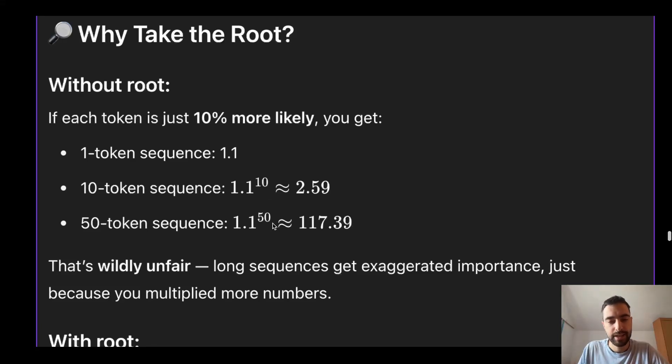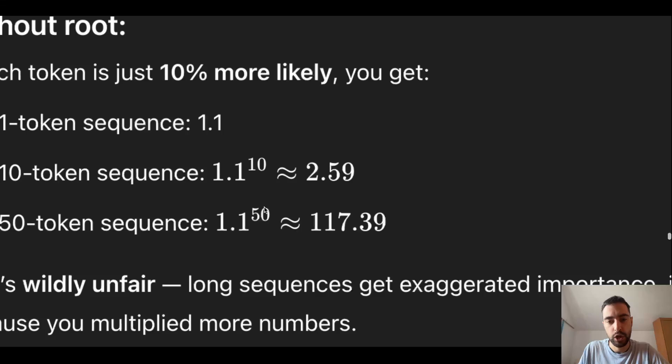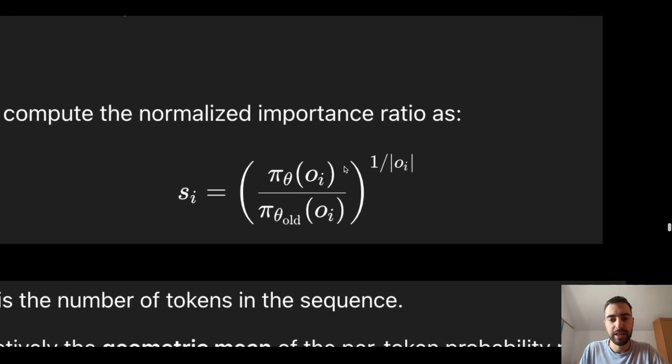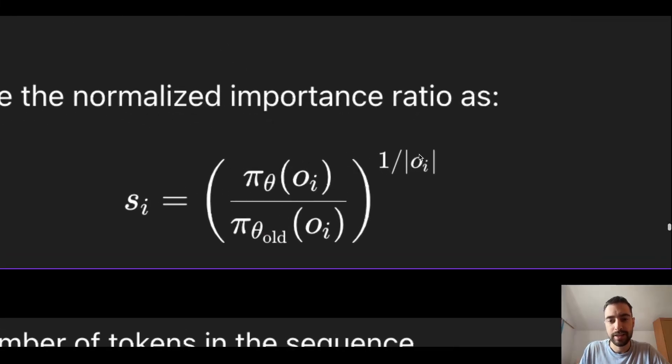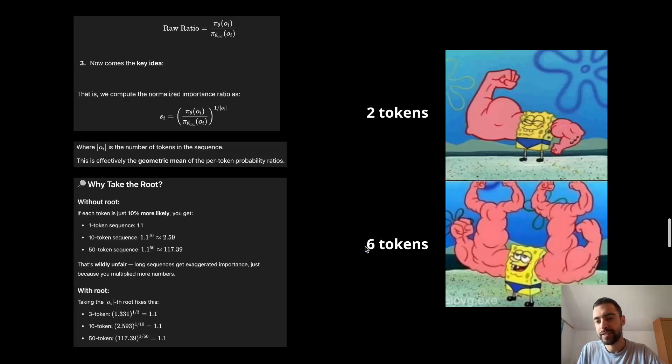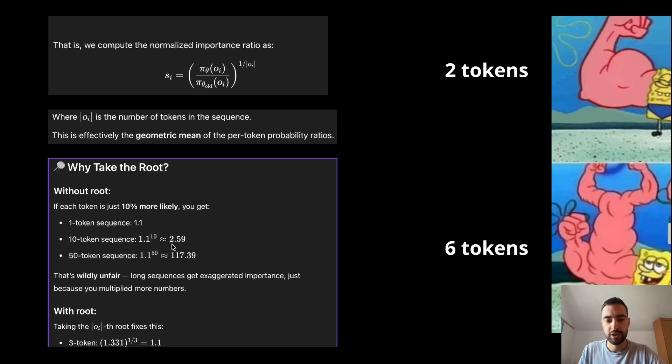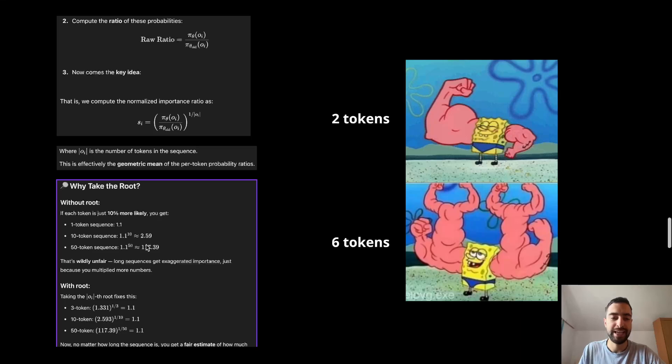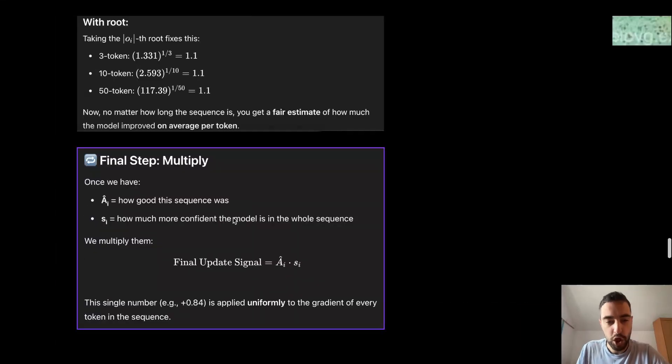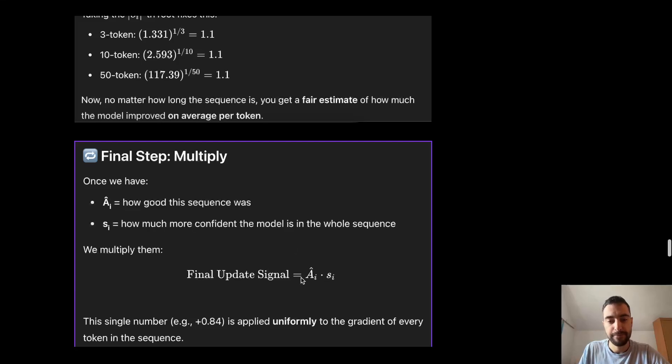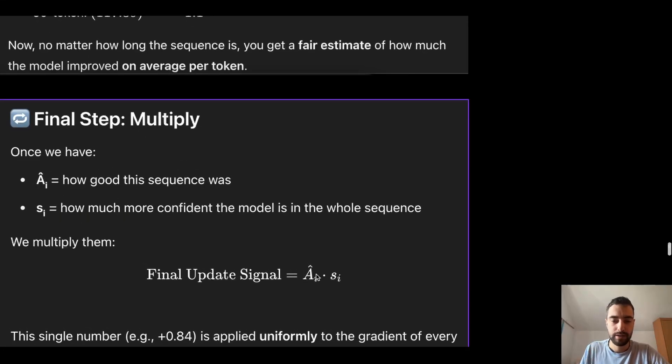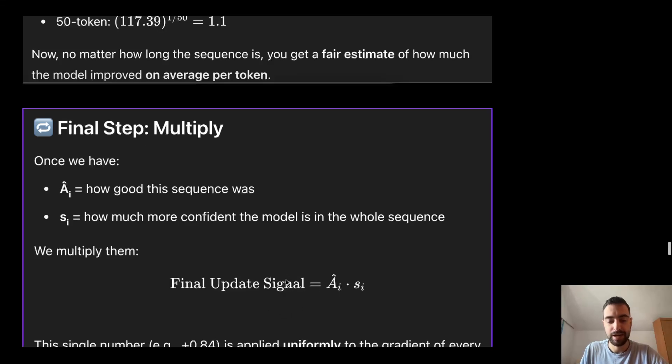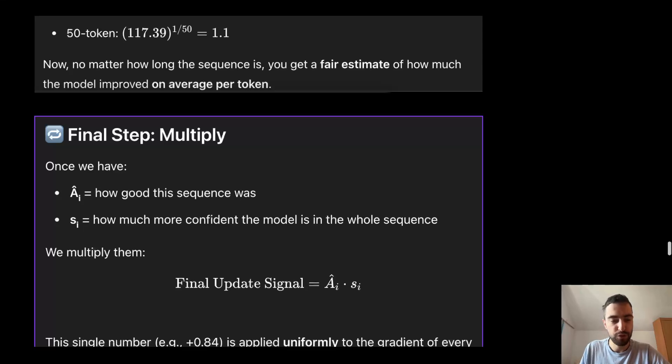So we just need to take 50th root of this to get 1.1, or 10th root of this to get 1.1, so 10%. So here in our formula, after we divide, then we need to take the root of this product according to the sequence length. Here you can see, just because we are using multiplication as opposed to addition, we get higher average per token, which is incorrect. So we need to take square root, or not square, we need to take nth root. So GSPO will just calculate average times this importance for the entire sequence, and then update every single token with this new signal for this, with the same number. The signal number is applied uniformly to the gradients of every token in the sequence.